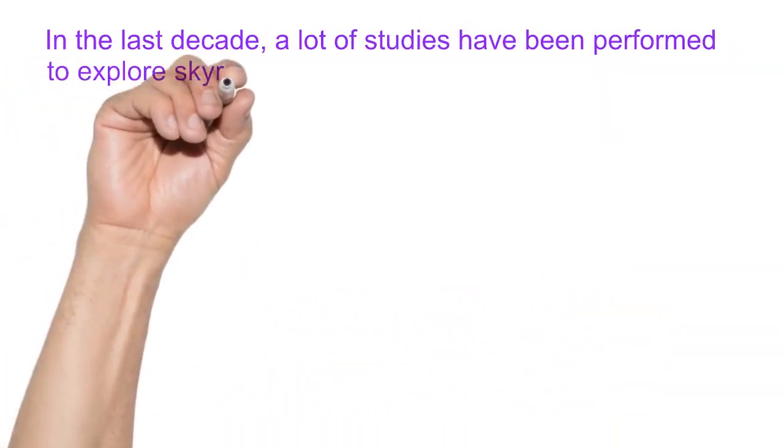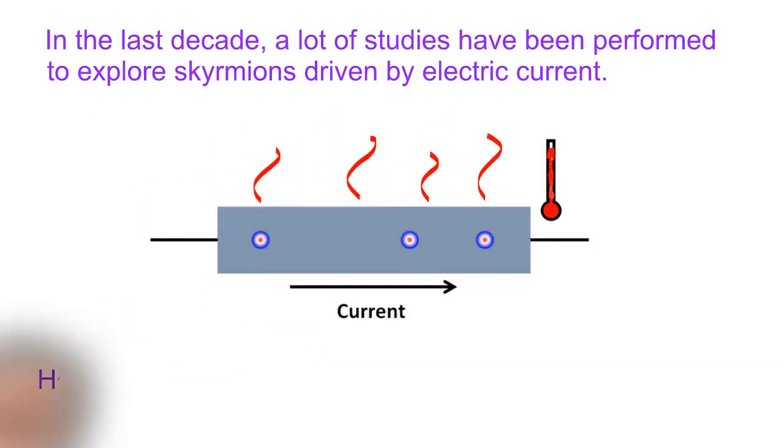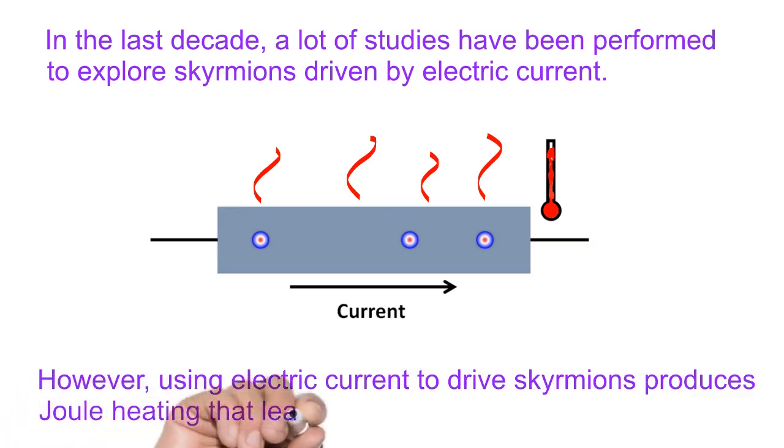In the last decade, a lot of studies have been performed to explore skyrmions driven by electric current. However, using electric current to drive skyrmions produces joule heating that leads to energy losses or damage.